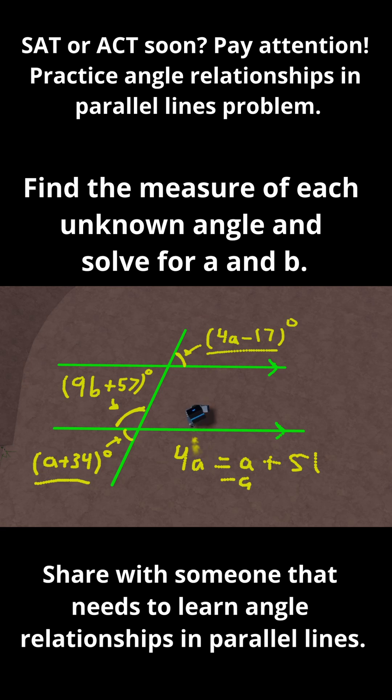Then subtract a from both sides. 4a minus a is 3a. So I have 3a equals 51. Finally, divide by 3 to solve for a. And 51 divided by 3 is 17. Therefore, a is equal to 17.